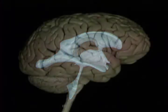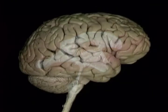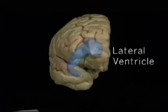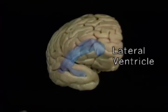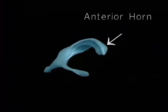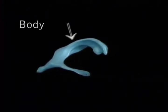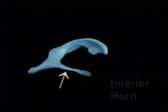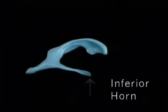The ventricles are filled with cerebrospinal fluid. Each cerebral hemisphere contains a cavity, the lateral ventricle, that's filled with cerebrospinal fluid. The lateral ventricle has an anterior horn, a body, a posterior horn, and an inferior horn.